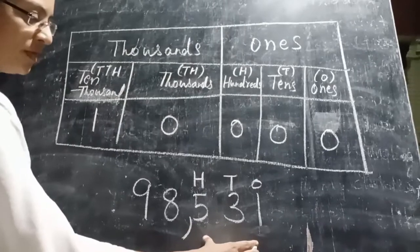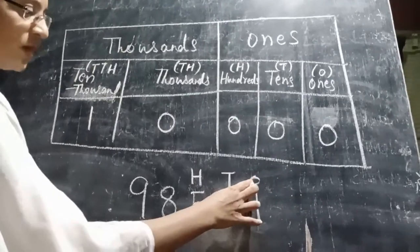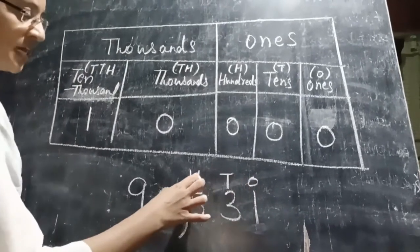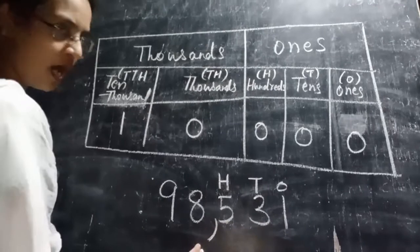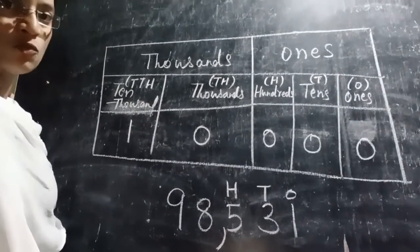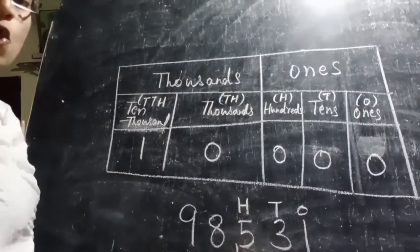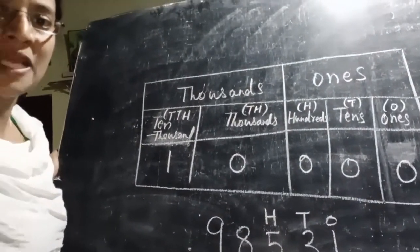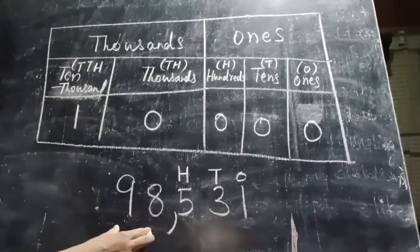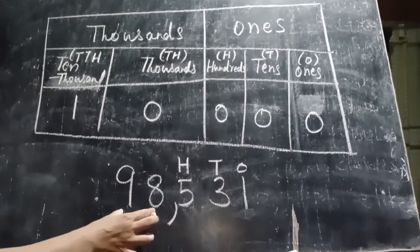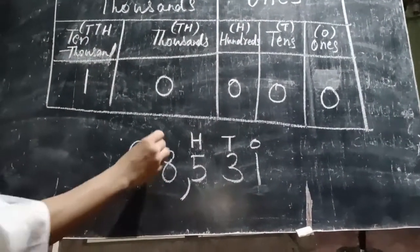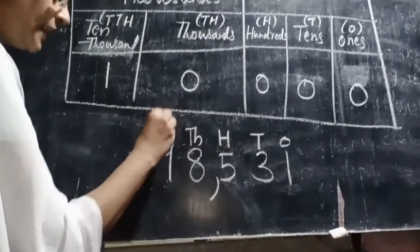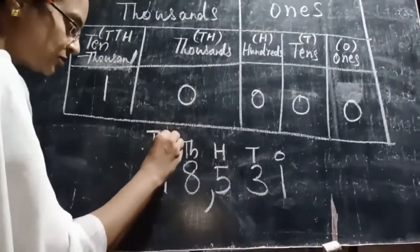The ones period has three places: ones, tens, and hundreds. After the ones period, use a comma to separate periods. Next is the thousands period, which has two places: thousands and ten-thousands.